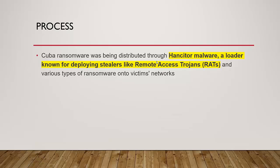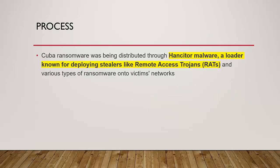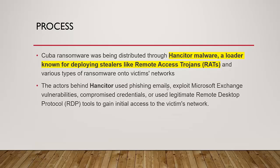Cuba uses Hancitor malware, which is a loader for deploying stealers, RATs, and various types of ransomware onto victim networks — essentially acting like a Trojan. The hacker convinces the user to install Hancitor, which opens a port, and through that port they gain access. Hancitor was created in 2014 to drop other malware on infected machines and is also known as 'Tordal' and 'Chanitor.' It is available as a service, making it accessible to criminals. Actors behind Hancitor use phishing emails to exploit Microsoft Exchange vulnerabilities and compromise credentials, then use RDP to gain system access.